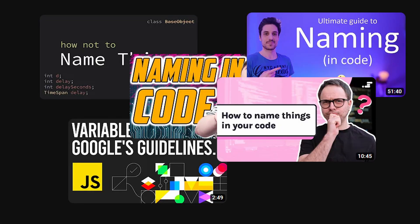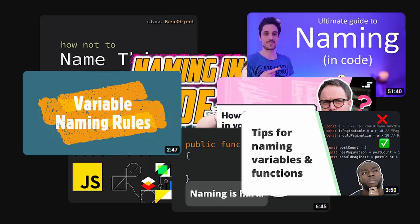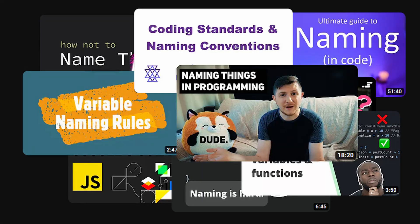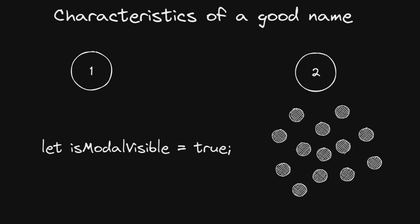So it's only natural that naming became an important topic for us. It is a part of heated discussions, PR reviews, and even conference talks. I would argue that there are two fundamental characteristics of a good name: it should express meaning, and it should help to differentiate one particular thing from other things.